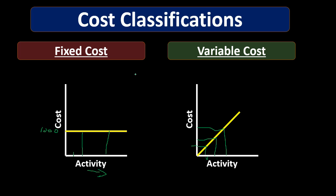Some costs will line up into fixed or variable very easily — wood in a guitar or rent are pretty straightforward. But some costs aren't as easy to place; they may have some combination of fixed and variable. Our goal in managerial accounting is to break everything out between fixed and variable costs, allowing us to make accurate projections into the future.